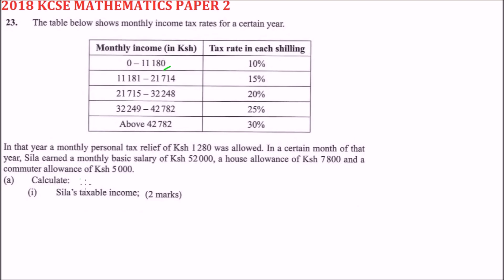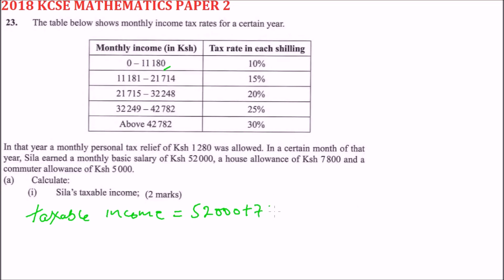The first question, Roman numeral one, asks us to calculate Sira's taxable income. We add the basic salary of fifty-two thousand, plus the house allowance of seven thousand eight hundred, plus the commuter allowance of three thousand, and when you add these up you get sixty-four thousand eight hundred.